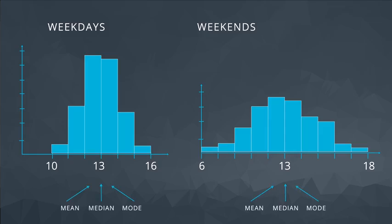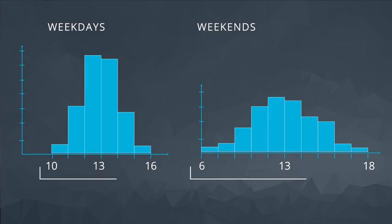But something is different about these two distributions. The difference is how spread out the data are for each group. You can see that the number of dogs I see on weekdays ranges from 10 to 16, while on weekends it ranges from 6 to 18. In the upcoming sections, we will look at the most common ways to measure the spread of our data.